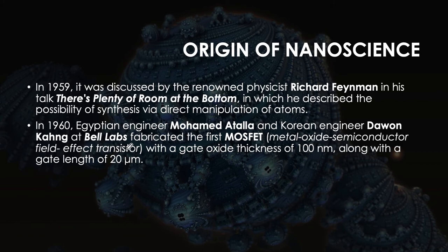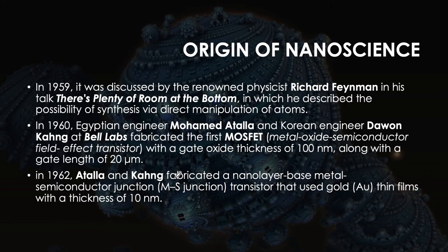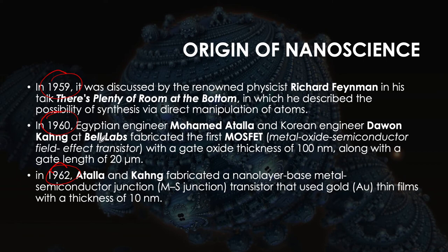In 1960, Egyptian engineer Muhammad Atala and Korean engineer Dawon Kang at Bell Labs fabricated the first MOSFET — Metal Oxide Semiconductor Field Effect Transistor — with a gate oxide thickness of 100 nanometers and a gate length of 20 micrometers. In 1962, Atala and Kang further fabricated a nano-layer base metal semiconductor junction, the MS junction transistor, using gold thin films with a thickness of 10 nanometers. These improvements, only years apart, show that science is not static — it's constantly changing and getting better.